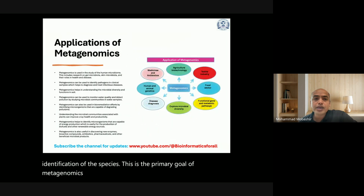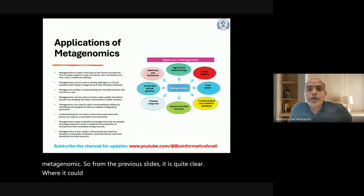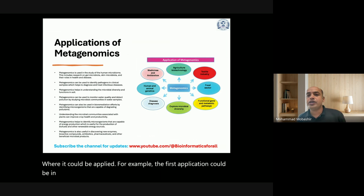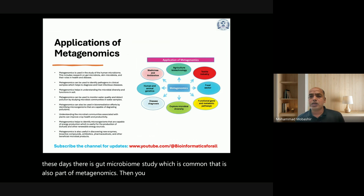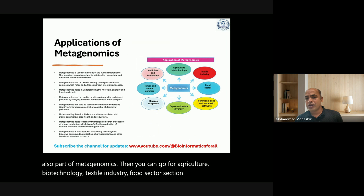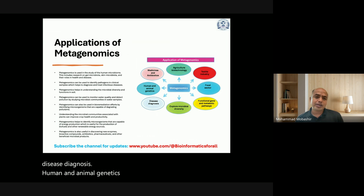Applications of metagenomics include the medical field — for example, gut microbiome studies — as well as agriculture, biotechnology, textile industry, and the food sector. Further applications include functional gene and metabolic pathway identification, exploration of microbial diversity, disease diagnosis, human and animal genetics, and the development of medicines and antibiotics.